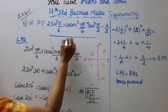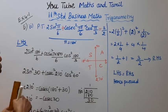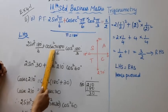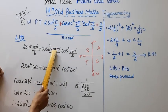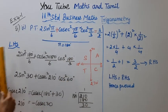If pi equals 180 degrees, it will be 2 sin squared 180 by 6 plus cosecant squared 7 into 180 by 6 into cos squared 180 by 3.